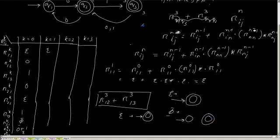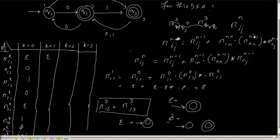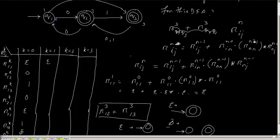When I am saying R31, where have we got this phi? From state Q3, I cannot reach Q1 — that is why R31 is phi. And what about R110 or R330? They remain in the state, meaning I am reaching the final state but I am not generating any symbol other than the empty string, so that is why it is epsilon.